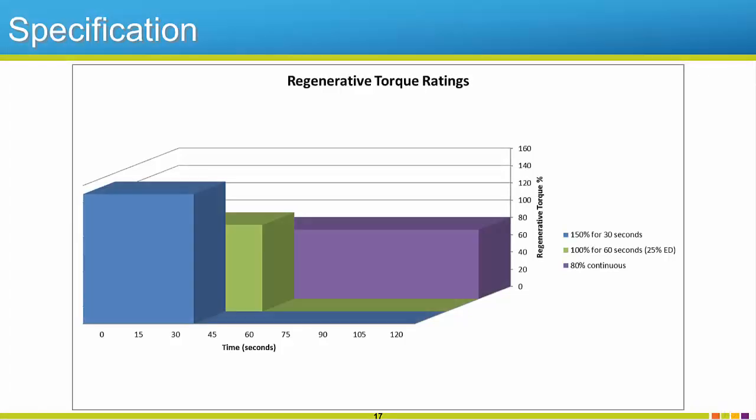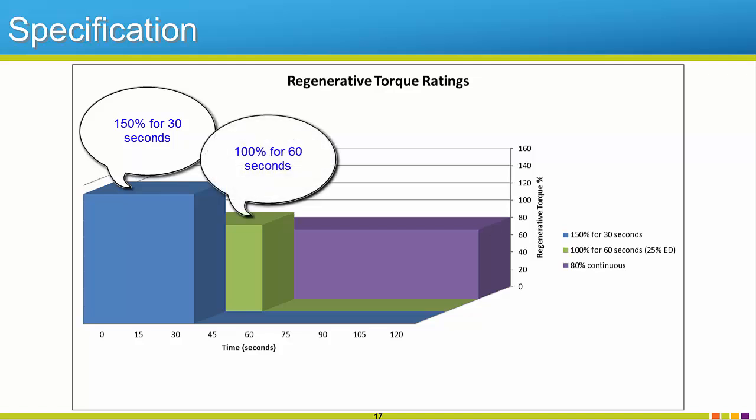While we are on the topic of duty ratings, here's some performance ratings for the R1000. The R1000 can handle up to 150% regenerative torque for 30 seconds, 100% for 60 seconds, and 80% regenerative torque continuously. Notice how at 100% regenerative torque, the duty cycle must be 25% or less. To simplify what that means, we can think of an application that regens 25% of the time. For example, one minute on and three minutes off. During that one minute, the R1000 can handle 100% regenerative torque.